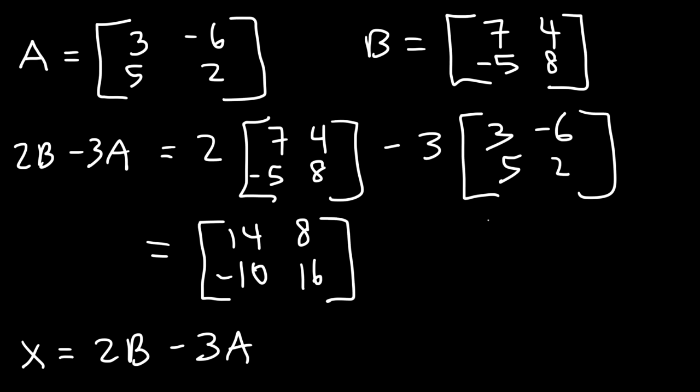Now for the second one, I'm going to multiply this matrix by -3. If I do that, since I used up the negative sign, a positive sign will be left over. So -3 times 3 is -9, -3 times -6, that's positive 18, then -3 times 5, -15, and -3 times 2 is -6.